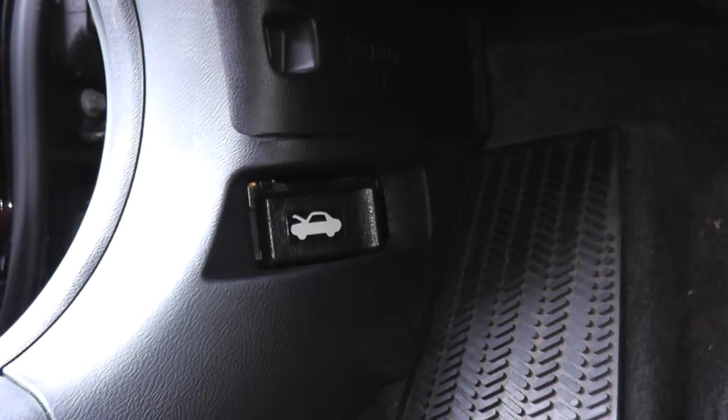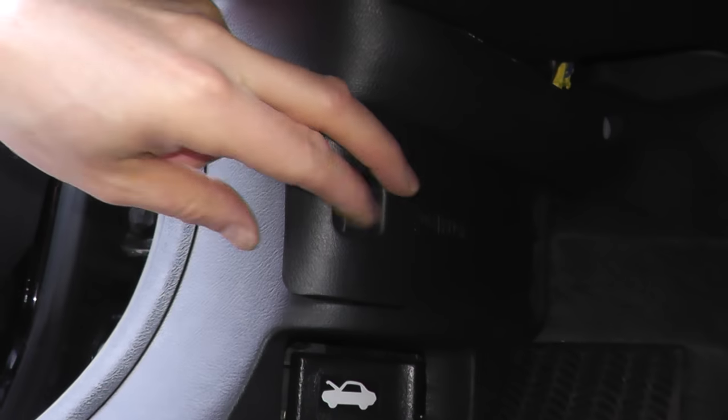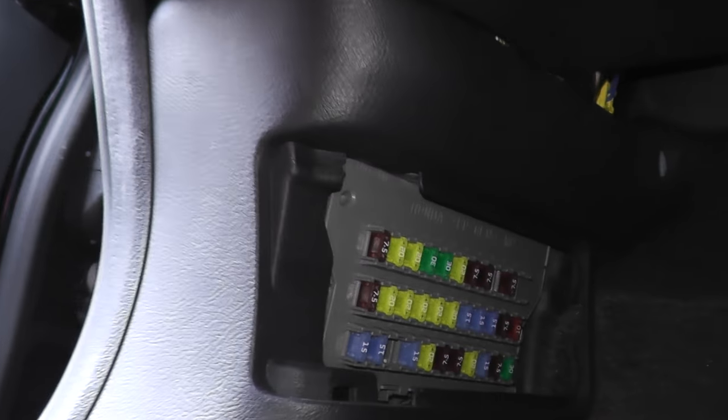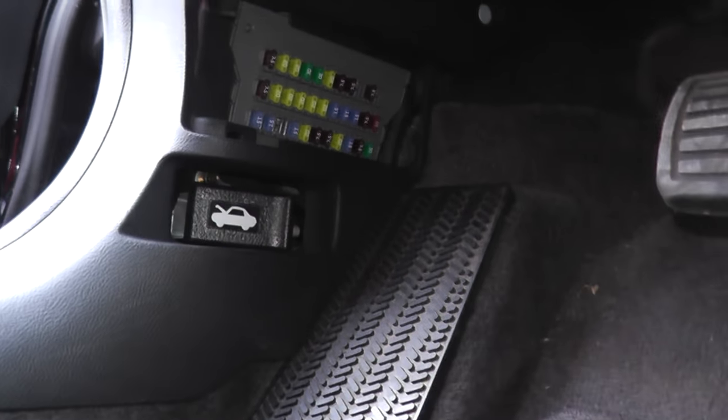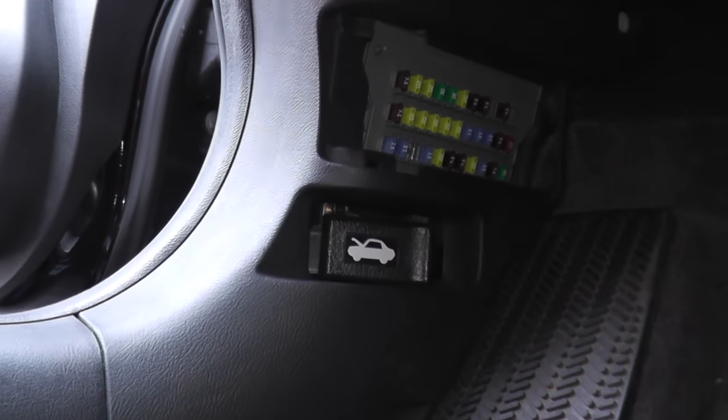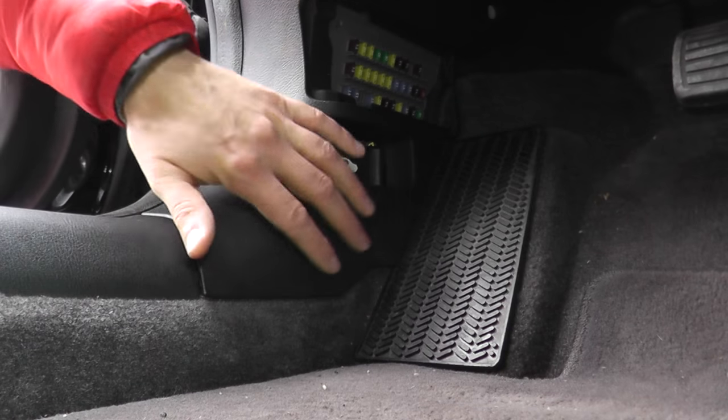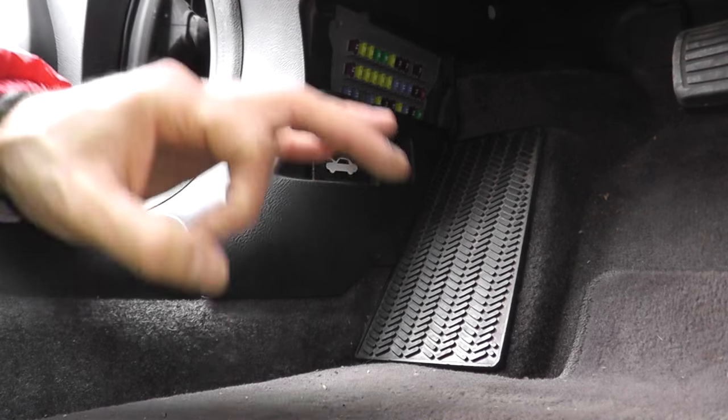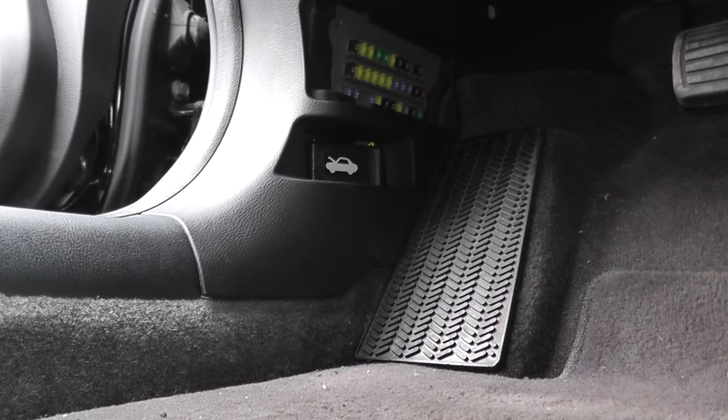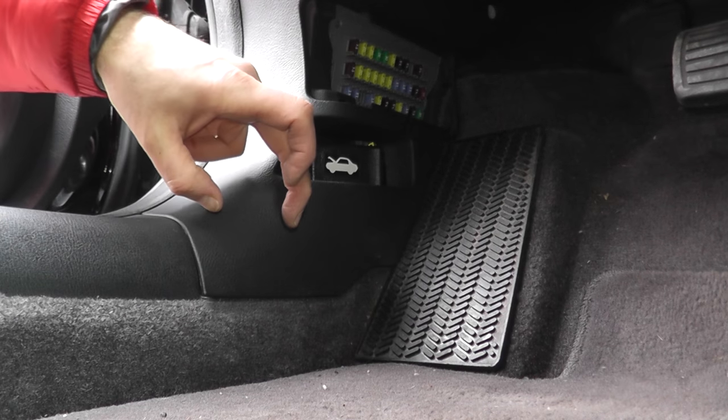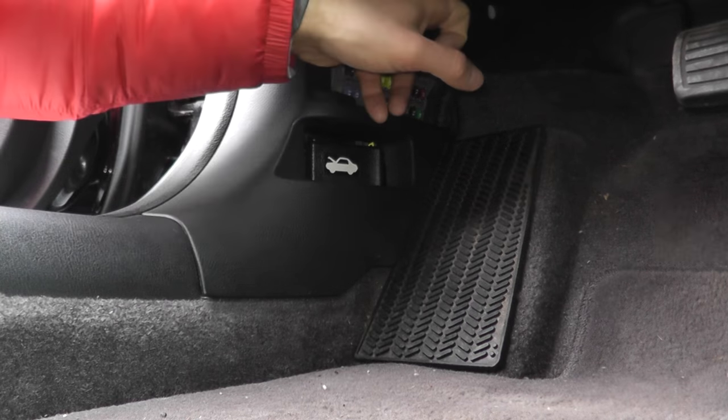We know based on that diagram that the relays live underneath the dash right there on the corner. In fact, if I remove this cover I have some fuses and then directly above it that's where we find the relays. Let me place down the camera and we'll remove this plastic cover. Now holding on this plastic cover really are just a few plastic fasteners which you will see in a moment.